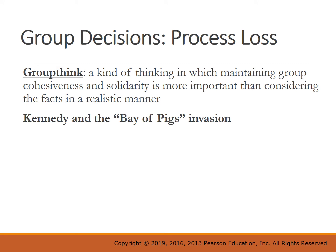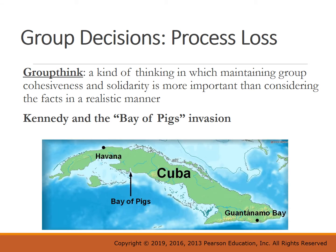A great historical example is Kennedy and the Bay of Pigs invasion. In 1961, Kennedy and his advisors tried to overthrow Castro of Cuba — the communist dictator of Cuba. After thinking about it for a long time, they decided to invade Cuba with 1,400 CIA-trained Cuban exiles. Nearly all the invaders were soon killed or captured, the US was humiliated, and Cuba allied itself even closer to the USSR. Kennedy afterward said, 'How could we have been so stupid?'